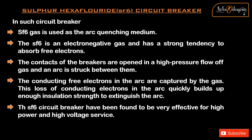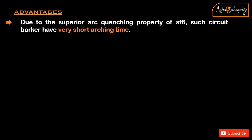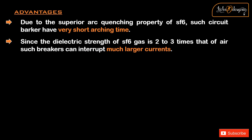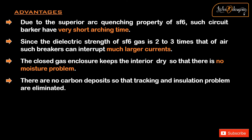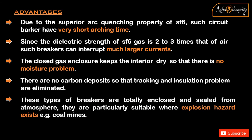SF6 circuit breakers have been found very effective for high power and high voltage service. Advantages: Due to the superior arc-quenching property of SF6, such circuit breakers have very short arcing time. Since the dielectric strength of SF6 gas is two to three times that of air, such breakers can interrupt much larger currents. The closed gas enclosure keeps the interior dry so there is no moisture problem, and there are no carbon deposits so tracking and insulation problems are eliminated. These breakers are totally enclosed and sealed from the atmosphere, making them particularly suitable where explosion hazards exist, for example in coal mines.